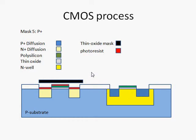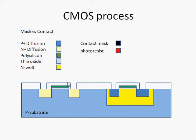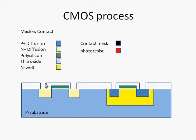Having created your transistors, you then want to make connections to other parts of the circuit. To do this, we need to create contact openings so that conductive layers can be deposited in these openings to make connections to the active areas. The gate oxide and field oxide are visible here, and the openings are made in the field oxide using a photolithographic process. The patterns for these openings are defined by the contact mask.